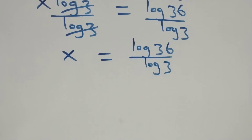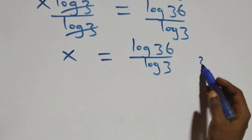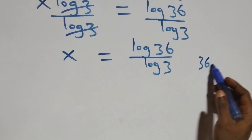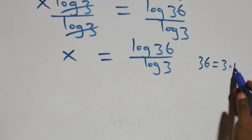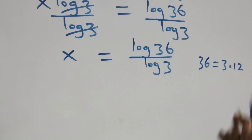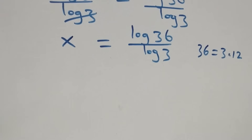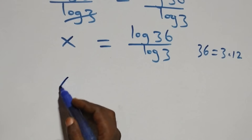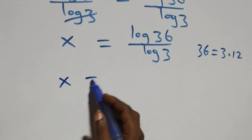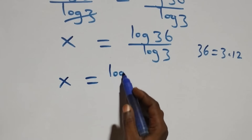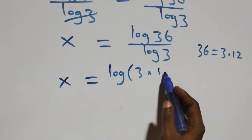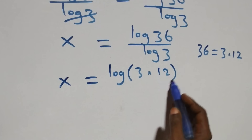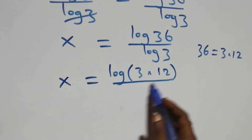From here we can express 36 as 3 times 12, which implies x equals to log(3 times 12) over log 3.